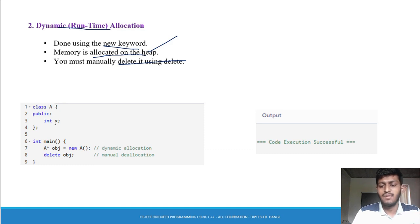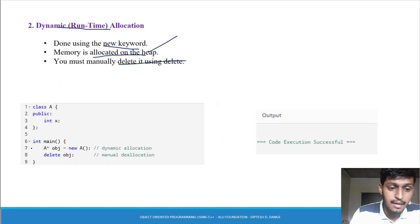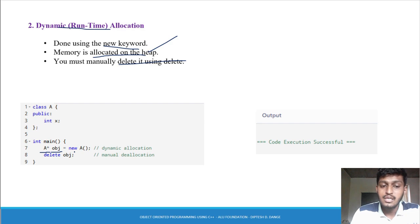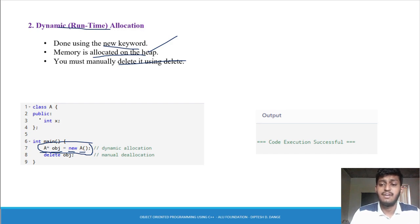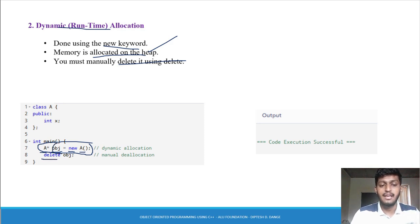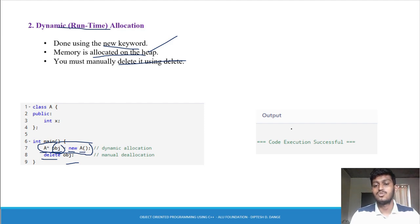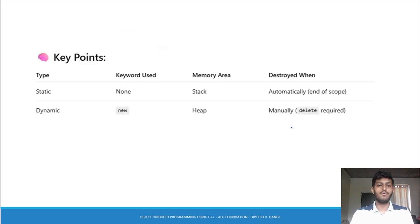Same class create किया, एक variable a है. बस हमें object कैसे create करना है — यह static allocation था: class का नाम और object name. यहाँ पर देखो dynamic allocation में pointer का use होता है, and using the new keyword — new keyword use किया, और class name के बाद parentheses देना पड़ेगा. In this way object dynamically और runtime पर create हुआ. अब आपको delete करना है — data members और member functions access करने के बाद, delete keyword से: delete obj. In this way dynamic allocation हो जाता है.